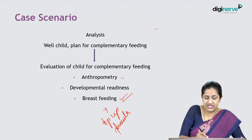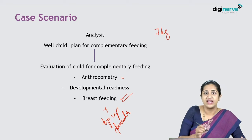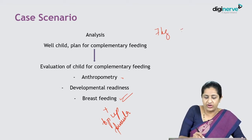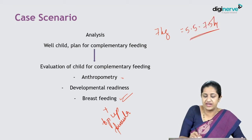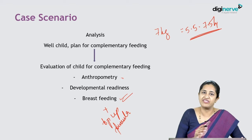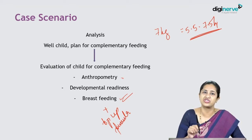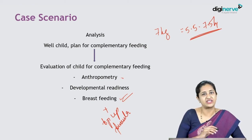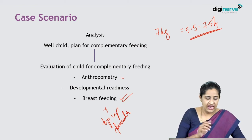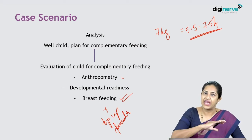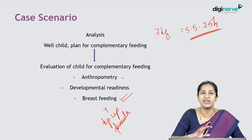Regarding anthropometry, this child weighs 7 kg. At 6 months of age, we expect the child to weigh somewhere around 5.5 to 7.5 kg. This child weighing 7 kg means that till 6 months of age, the baby's nutrition has been adequate. Baby's length is adequate, head circumference has also been normal, and the child has come ready for complementary feeding, having been taken care of very well by breastfeeding.